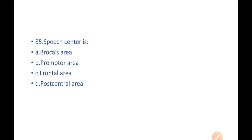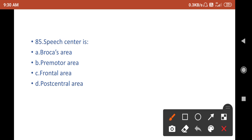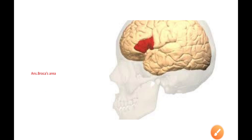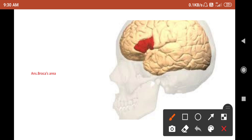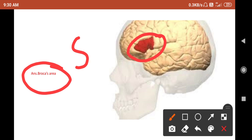Next: the speech center is located in — A) Broca's area, B) premotor area, C) frontal area, D) post-central. The answer is Broca's area. The speech center is also known as Broca's area. This is one of the most repeated questions in central government, state government, and competitive examinations, so remember it very well.